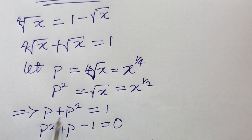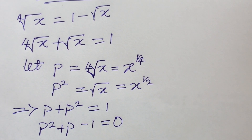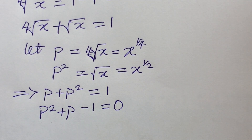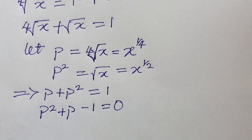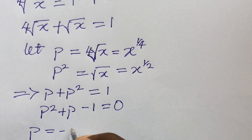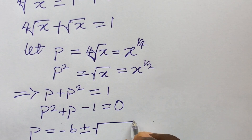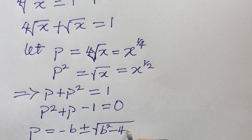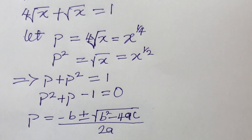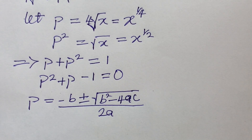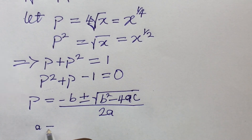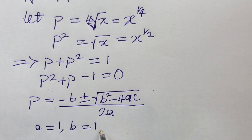We cannot solve this quadratic equation using the factorization method, so we use the quadratic formula: p equals negative b plus or minus the square root of b squared minus 4ac, all over 2a. From our equation, a equals 1 (coefficient of p squared), b equals 1 (coefficient of p), and c equals negative 1 (the constant term).